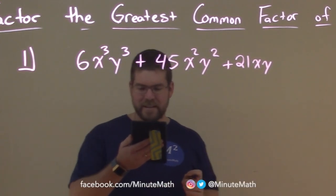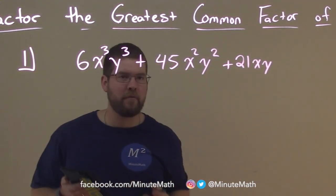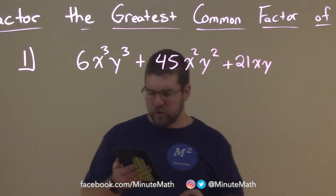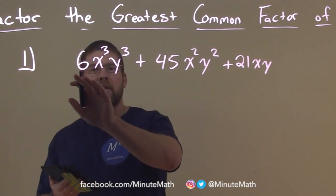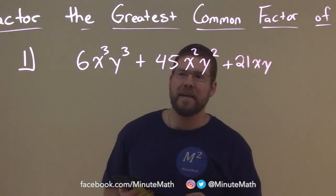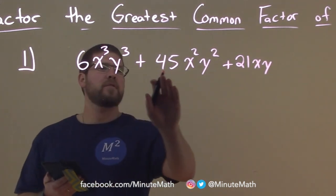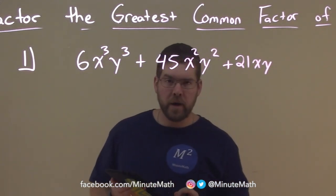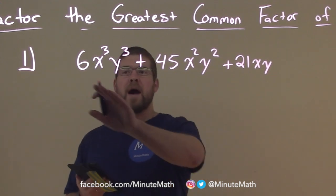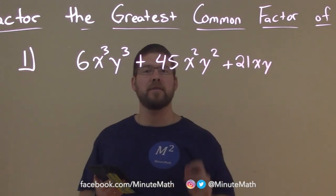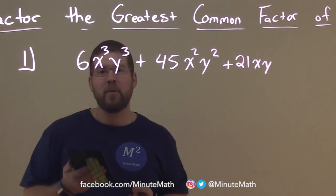We want to factor the Greatest Common Factor out of this. So we first want to start with the coefficients in front of each term, the numbers. We have 6, 45, and 21. What is the Greatest Common Factor for each of these numbers combined together? That would be 3.